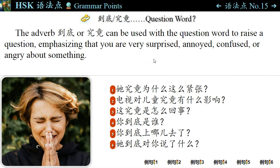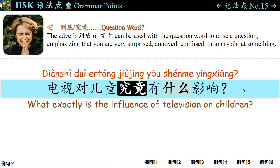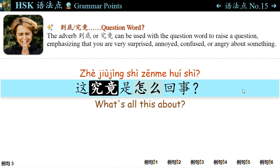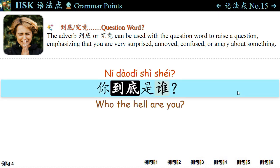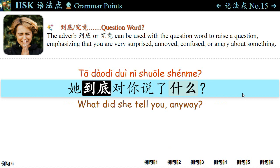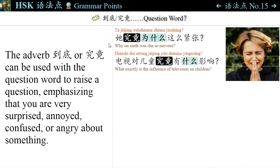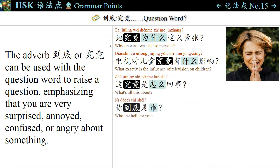语法点十五: The adverb 到底 or 究竟 can be used with a question word to raise a question, emphasizing that you are very surprised, annoyed, confused, or angry about something. For example: 他究竟为什么这么紧张? — 究竟为什么? — Why on earth? 电视对儿童究竟有什么影响? — 究竟有什么影响? 这究竟是怎么回事? — What's all this about? 你到底是谁? — Who the hell are you? 他到底上哪儿去了? 他到底对你说了什么? — What did she tell you, anyway? 到底 or 究竟 can be used with a question word to emphasize that you are very surprised, annoyed, confused, or angry about something.